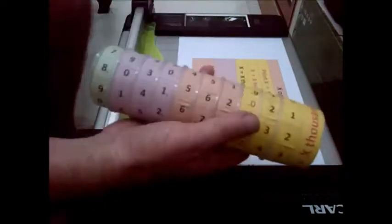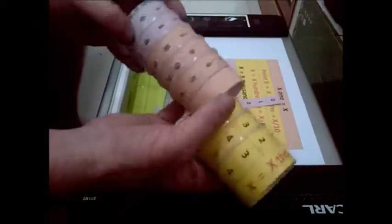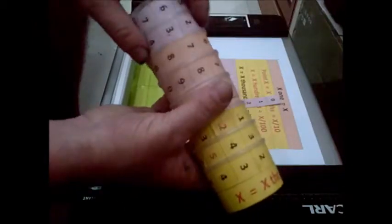Again, as an extra activity, pull all the cups apart, jumble them all up, and get the kids to rebuild the actual place value in their proper order.